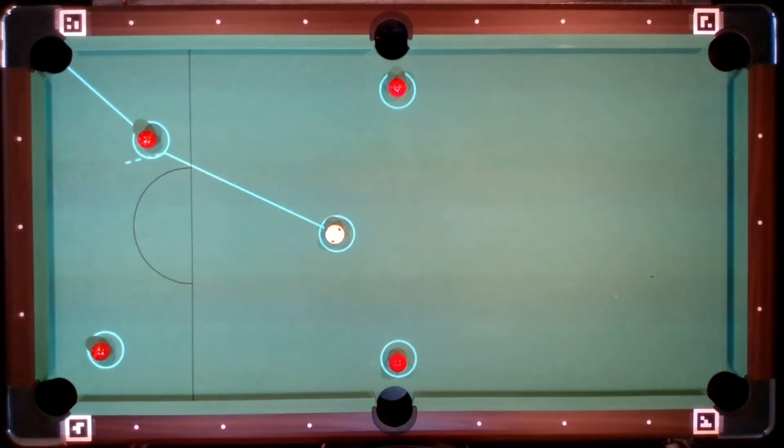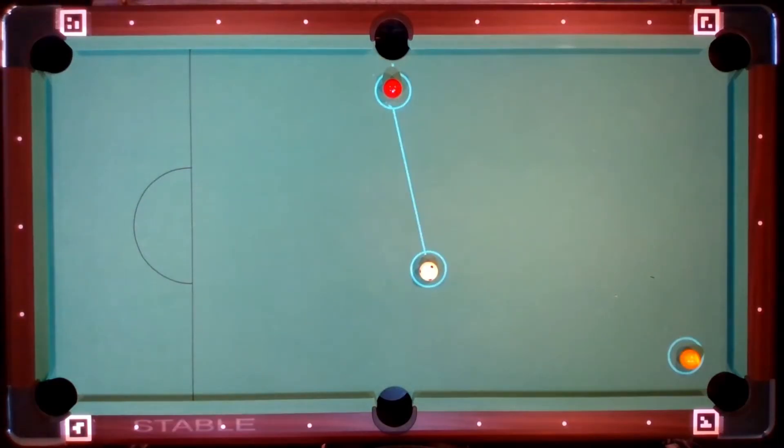How hard and at what angle the white ball has to be played is calculated and animated. The resulting game situation is calculated using a physical simulation. This means that possible future shots can be taken into account in the search and planned as strategically as in a chess game.